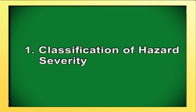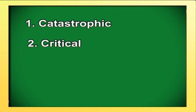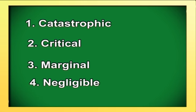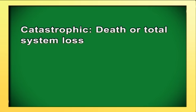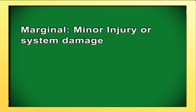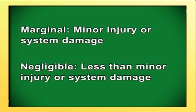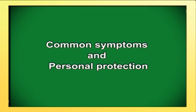Hazard severity can be classified into four groups: catastrophic, critical, marginal and negligible. Catastrophic means death or total system loss. Critical means severe injury, illness or major system damage. Marginal means minor injury or system damage. Negligible means less than minor injury or system damage.